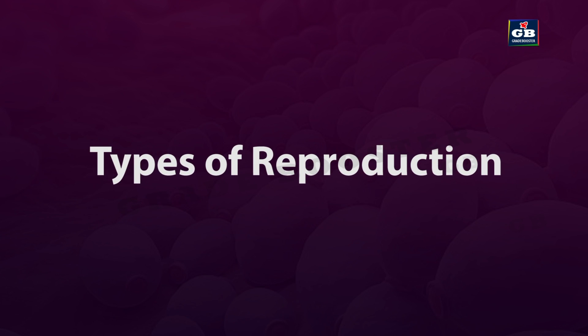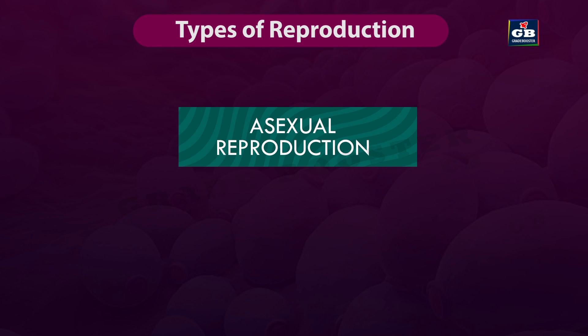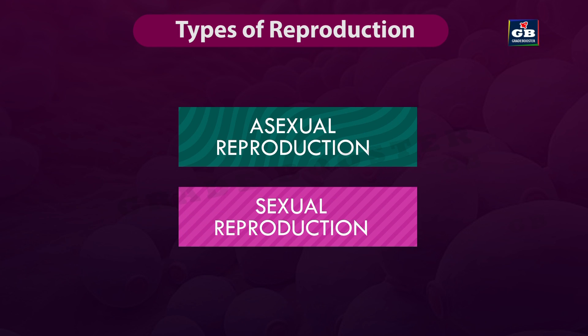Types of reproduction. Reproduction is of two types: asexual reproduction and sexual reproduction.